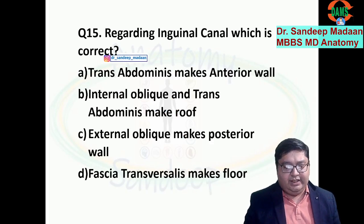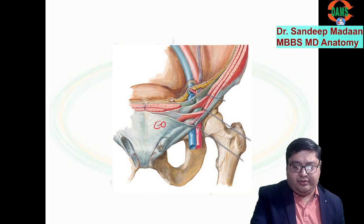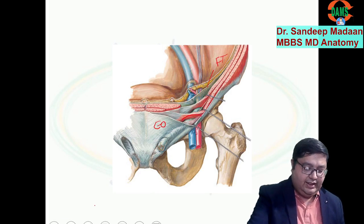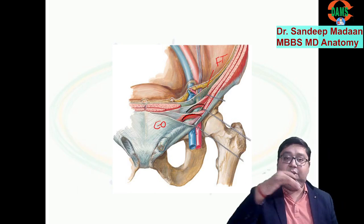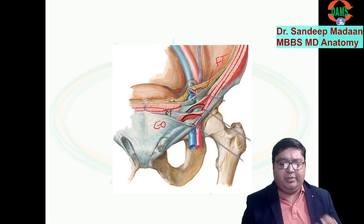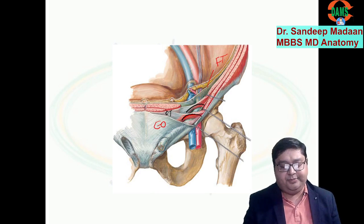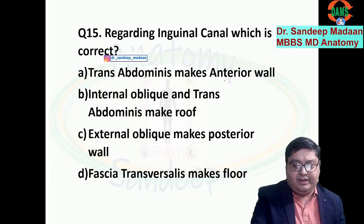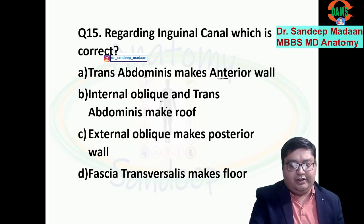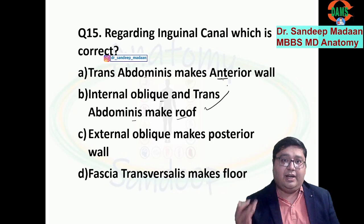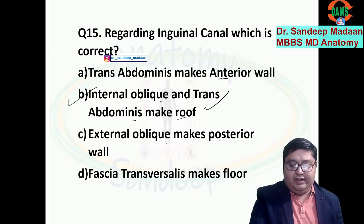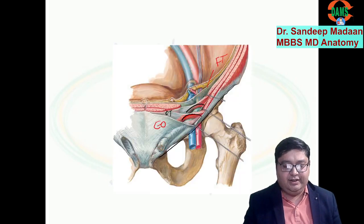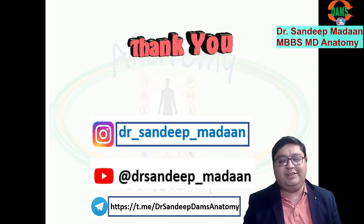Regarding the inguinal canal boundaries: external oblique forms the anterior wall throughout. Posteriorly it is formed by fascia transversalis. The internal oblique and transversus abdominis arch over to form the roof, and they also form the conjoint tendon posteriorly in the medial aspect. The floor is formed by the inguinal ligament. Transversus abdominis does not contribute anteriorly — internal oblique and transversus abdominis together form the roof. Answer B is correct. External oblique — anterior wall; fascia transversalis — posterior wall; inguinal ligament — floor. Thank you all, God bless you.